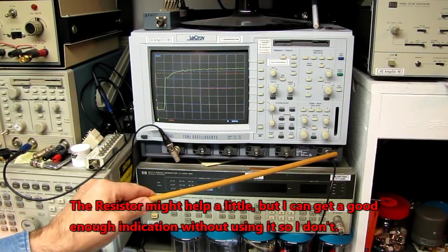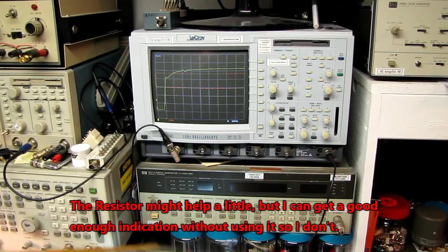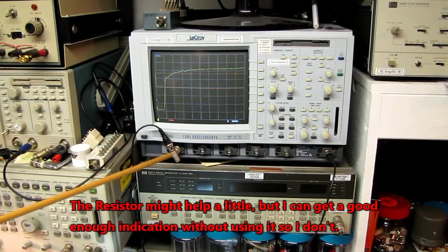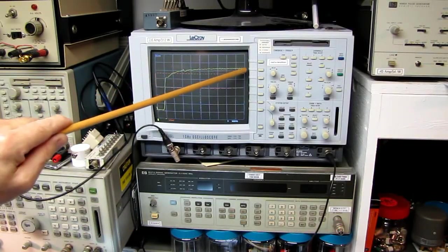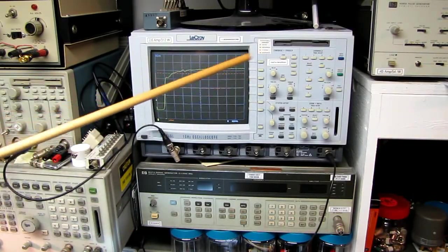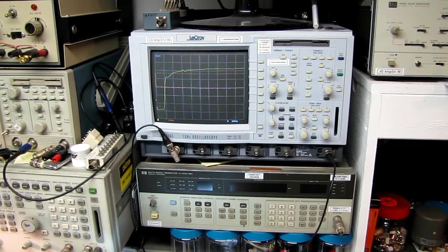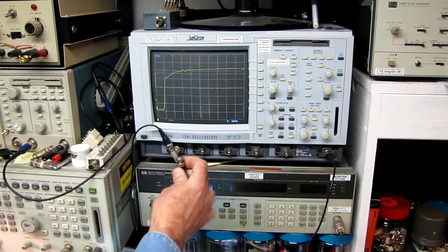So I've taken a coax cable from the calibrator and I've brought it over into channel one on the scope with a T-fitting, and you can see the pulse coming out of the calibrator - square wave coming out.